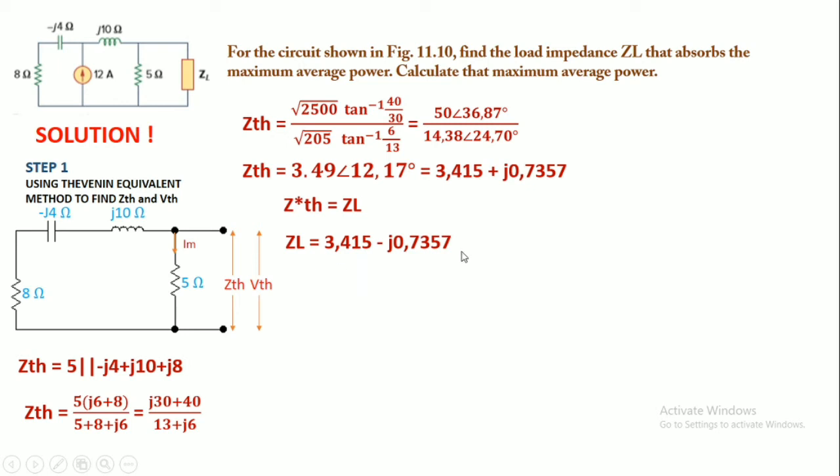So the value of Vth is the same value as the voltage flowing at the 5 ohm resistor. So the voltage is 5 multiplied with Im. And to find Im, we can use the current divider.